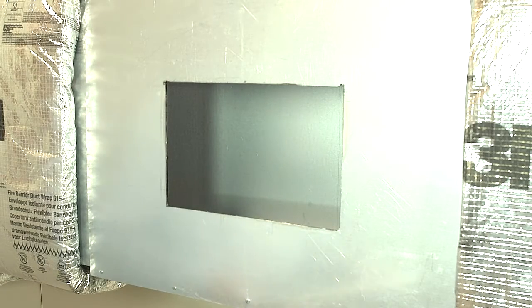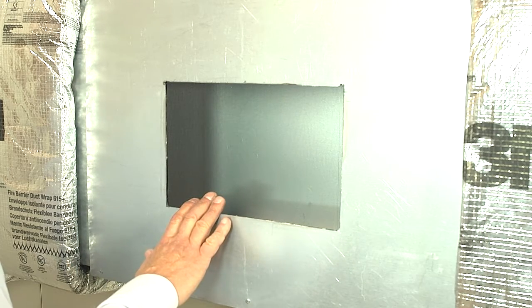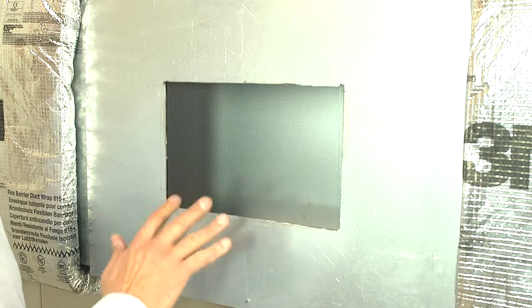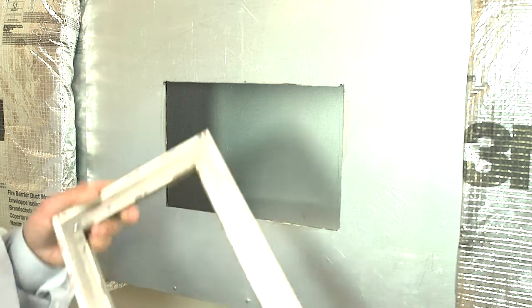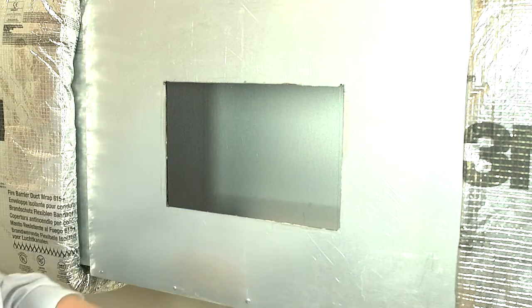All right, we are going to install a 6x10 easy access door. So in order to do that, we cut the hole in the duct at 7 inches by 11, so one inch extra from the size of the door. I'm now going to take the base mounting plate and take the relief paper off.